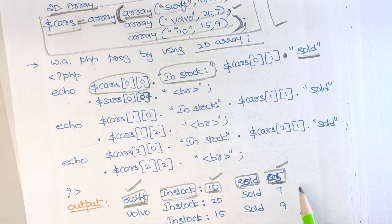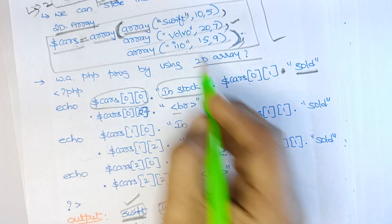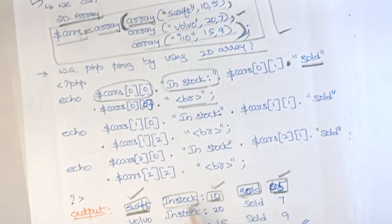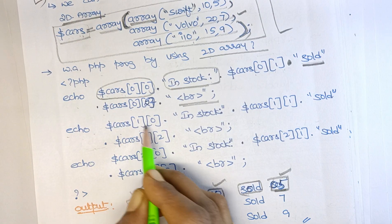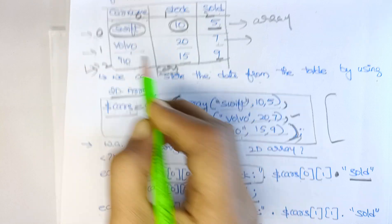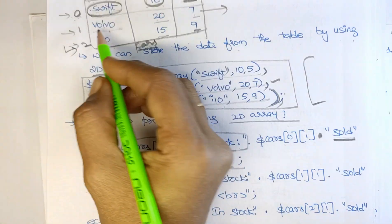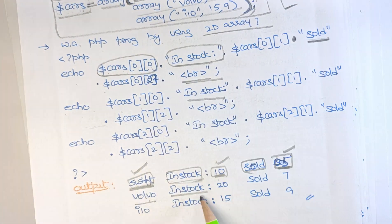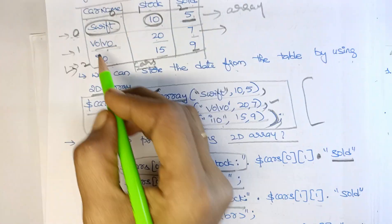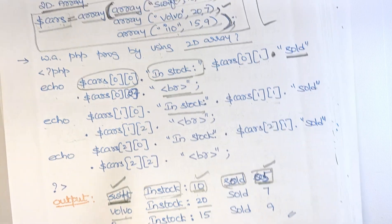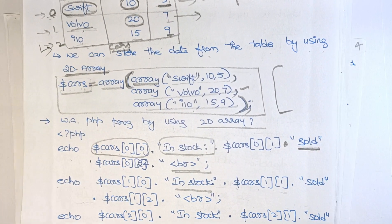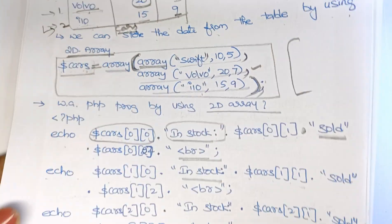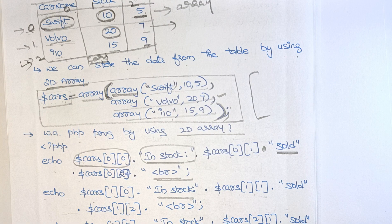After printing the first row, use a break tag for a new line, then echo the next row. Dollar cars[1][0] gives 'Volvo', concatenate 'in stock', dollar cars[1][1] gives 20, and so on. This is a multidimensional array, also called a two-dimensional array. In your examination it is mandatory that you write the program as well.